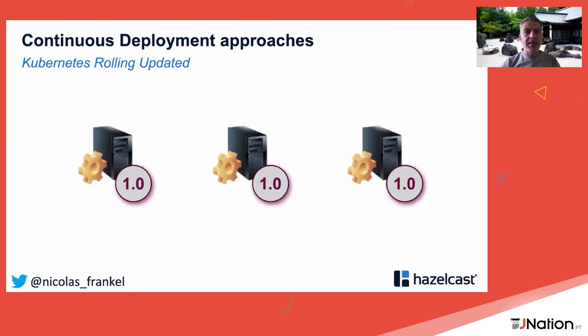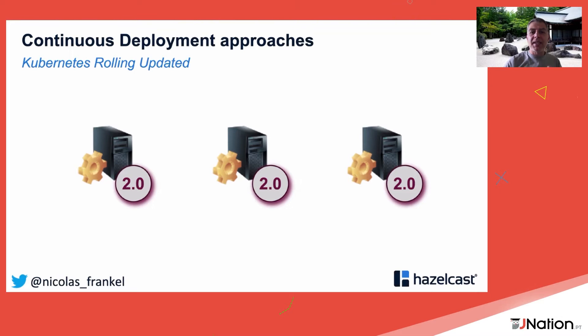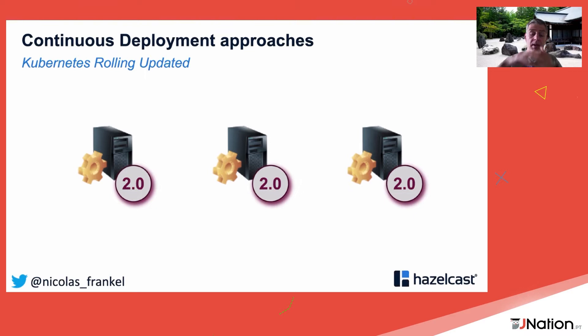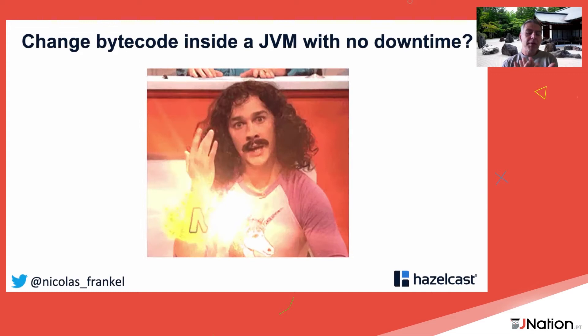Kubernetes is there to solve problems with rolling updates — deploying node by node. But it's only magic if your workload is stateless. If it's stateful, the database issue remains: either two databases with instant migration being nearly impossible, or one database where schema changes must be handled gracefully.